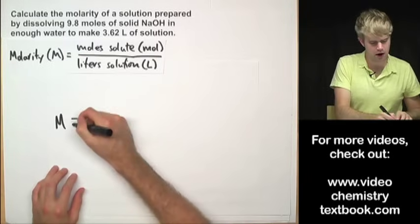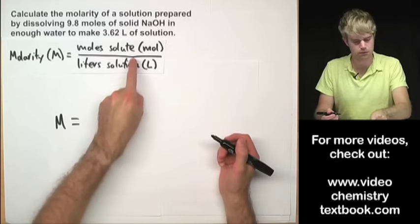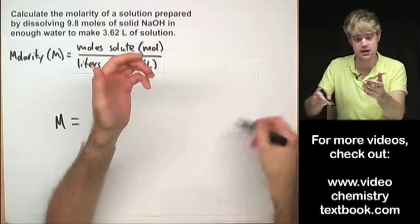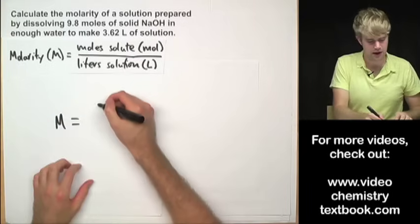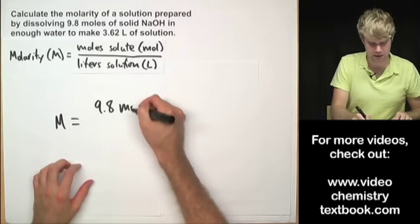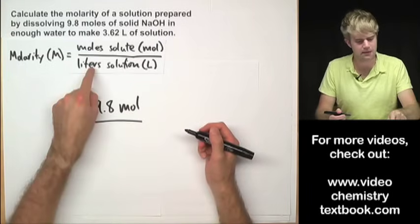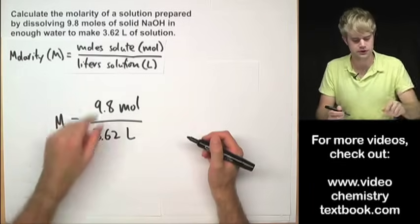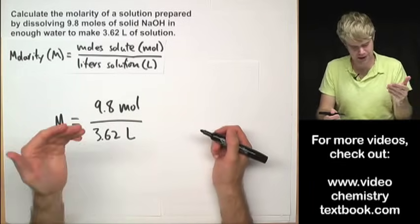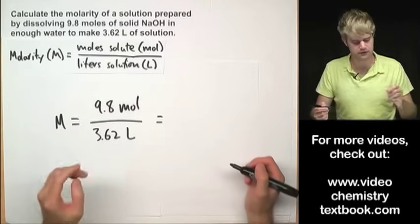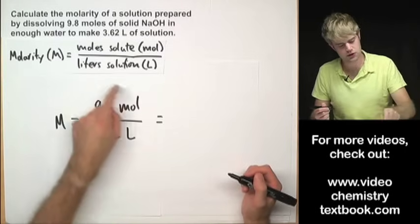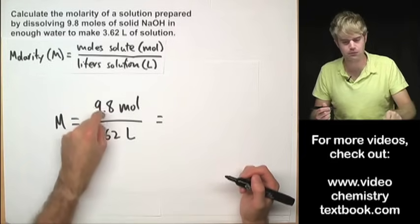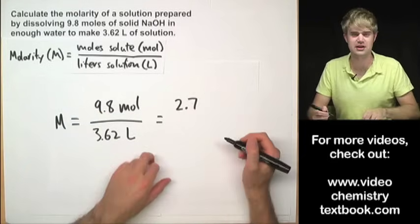To set our equation up: molarity equals moles of solute. Sodium hydroxide is the solute here because it's getting dissolved in water, and we have 9.8 moles of that, divided by liters of solution, which is 3.62 liters. So 9.8 divided by 3.62, rounded to two significant figures, gives us 2.7.